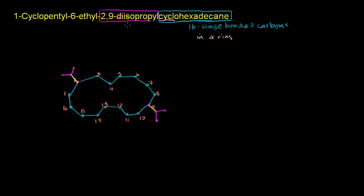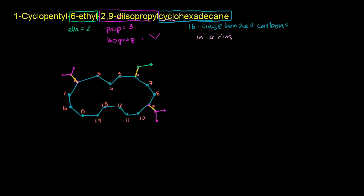We've taken care of the 2,9-diisopropyl. Then we have the 6-ethyl, which is just a 2-carbon group. Remember: meth is 1, eth is 2, prop is 3. So this is a 6-ethyl group — at position 6, we have an ethyl group: 1, 2 carbons, connected at the 6-carbon on the main ring.